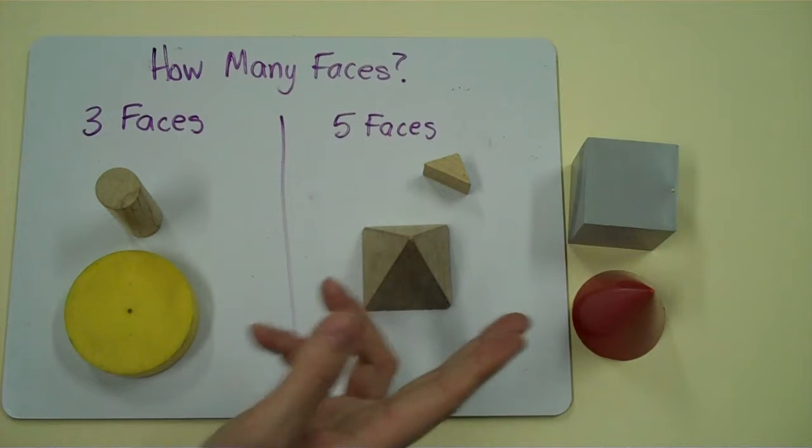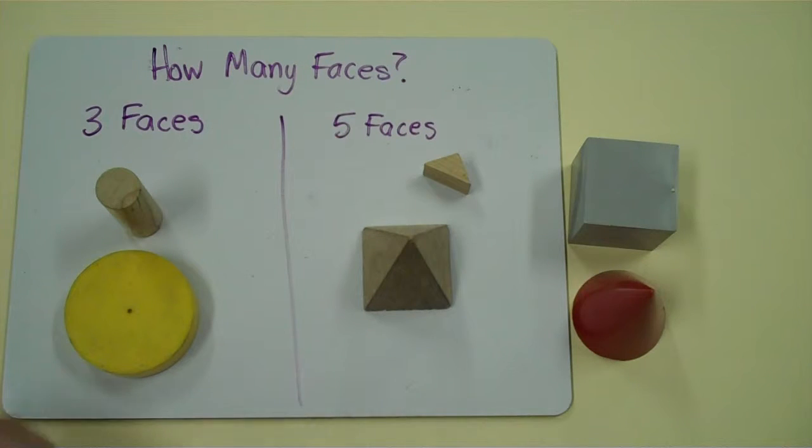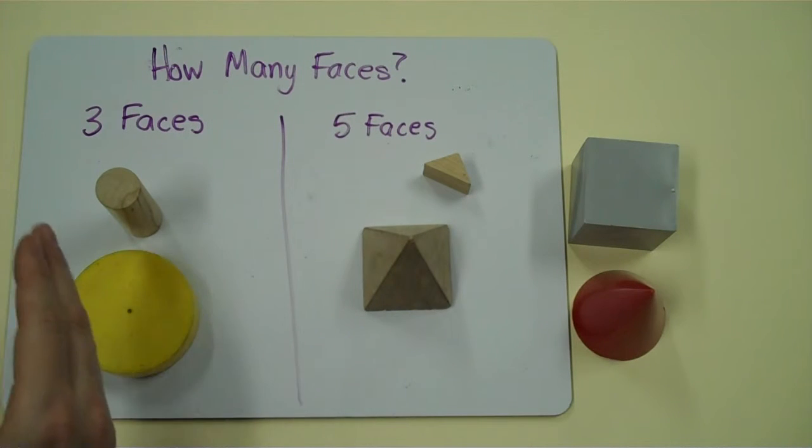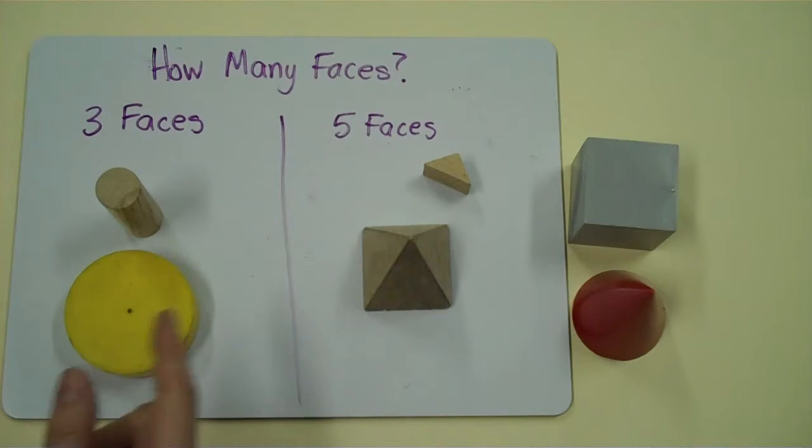But we know that there can be objects that have different faces, one, six, two. So the next step, once we've mastered learning how to choose a rule and choosing how to sort,